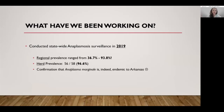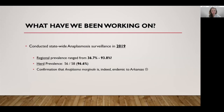In 2019, we did a statewide surveillance looking at roughly 60 different herds, evaluating the overall prevalence of anaplasmosis in cattle across Arkansas. We divided the state into different geographical regions and found that infection rates ranged anywhere from 36% to almost 94% of animals being infected. Of all the herds tested, 56 out of 58 had at least one animal that tested positive for Anaplasma. We confirmed that Anaplasma marginale is indeed endemic to Arkansas.